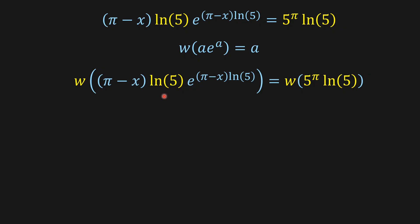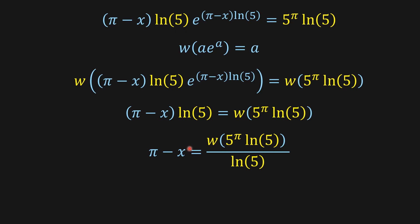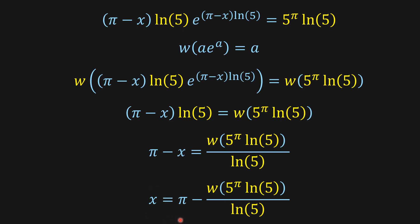Applying the Lambert W function, we have W of this expression equals W of this expression. From here we know that this is going to be A, so this is going to be pi minus x times ln of 5, which is this one here. Dividing both sides by ln of 5, we're going to have this one. Then we send pi to this side — we could send x to this side and this one to this side — and then we're going to have x equals pi minus the Lambert W function of this expression, over ln of 5.